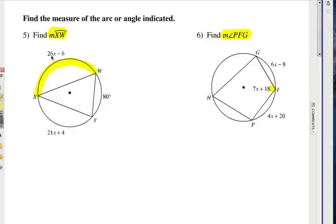Can you somehow combine all that information and figure out not only what x is but then plug it in here and figure out the actual measure of arc xw. And at number six, we have a quadrilateral here inscribed in the circle. This arc right here is 6x minus 8. This arc here is 4x plus 20. And this angle inside here is 7x plus 18. We're trying to figure out what x is and then plug it into this expression and find its actual measure. Pause this video and good luck.